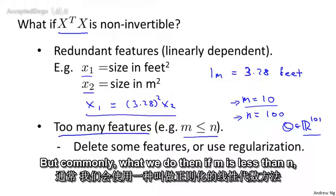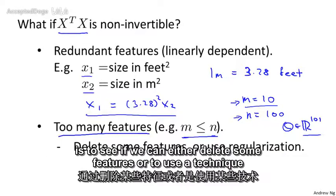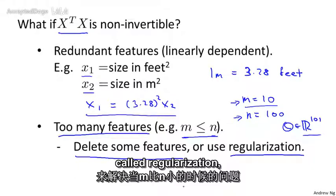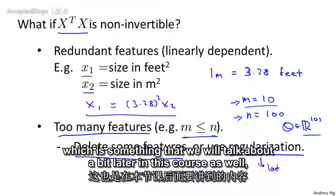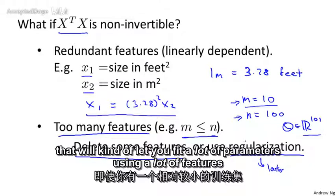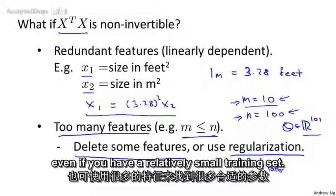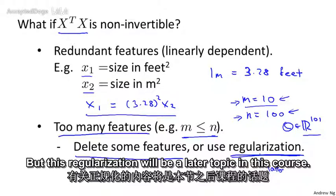But commonly what we do then, if m is less than n, is to see if we can either delete some features, or to use a technique called regularization, which is something that we'll talk about later in this course as well, that will kind of let you fit a lot of parameters, use a lot of features, even if you have a relatively small training set. But this regularization will be a later topic in this course.